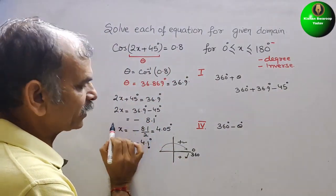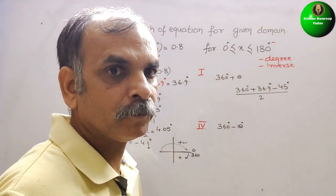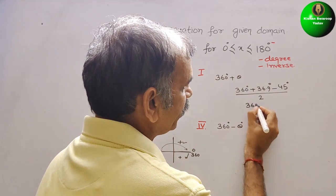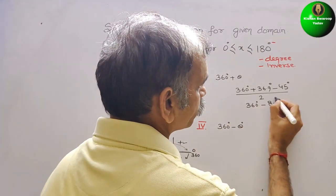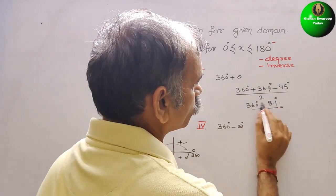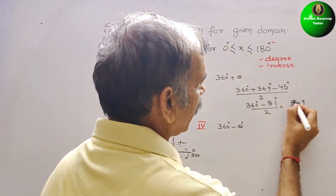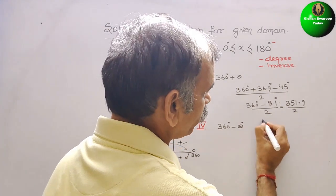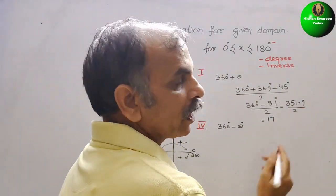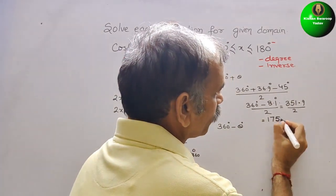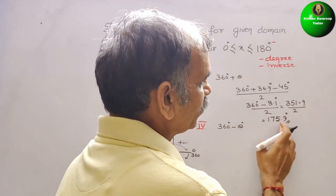They have given 2x, so we divide by 2. For the first case using 360° + θ: 2x + 45° = 360° + 36.9°, so 2x = 360° + 36.9° − 45° = 351.9°. Dividing by 2: x = 175.95°, which we can write as approximately 175.9°. So 175.9° is our first solution.